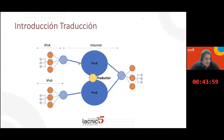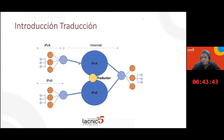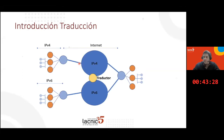When we speak of transition mechanisms, we understand that NAT64 and DNS64 are transition mechanisms. These come in different flavors: dual stack, where you have both IPv4 and IPv6; encapsulation, where you put IPv6 around IPv4; and a third flavor which is translation — that's what NAT64 is.